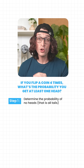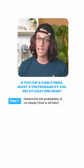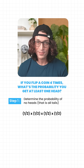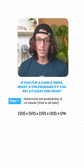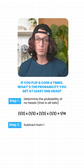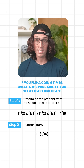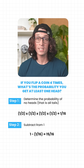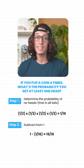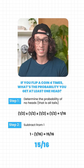Determine the probability of no heads — that is, all tails. One half times one half times one half times one half equals one sixteenth. Step two: subtract from one. One minus one sixteenth equals fifteen sixteenths. So the probability of getting at least one head is fifteen sixteenths.